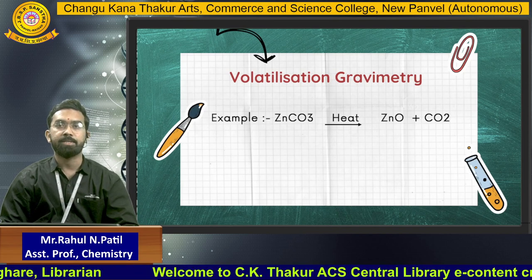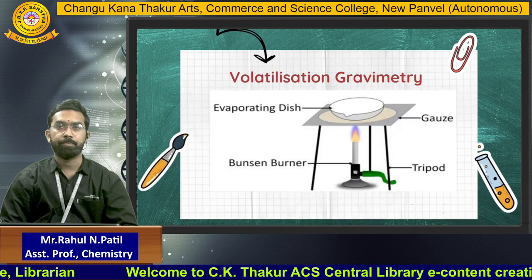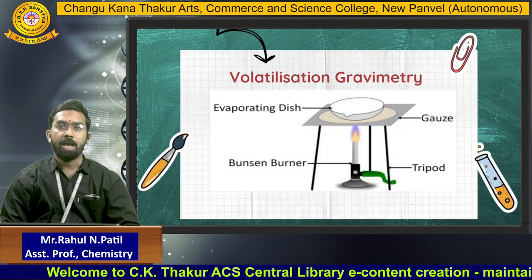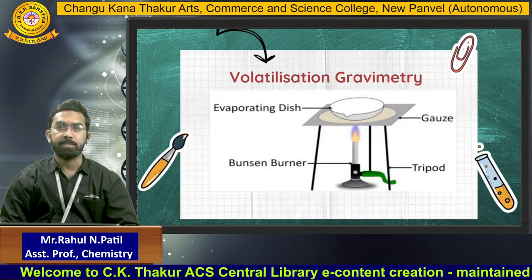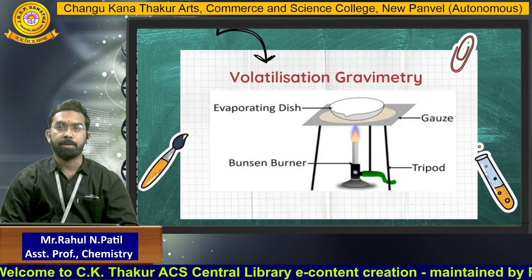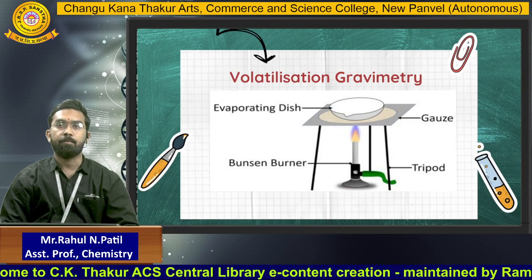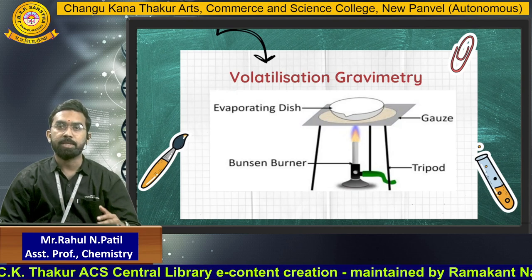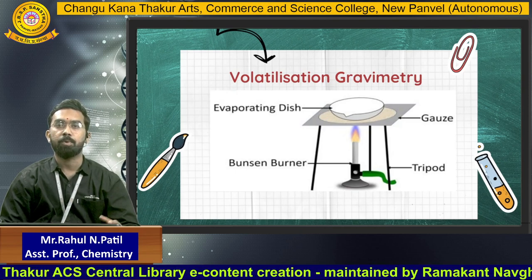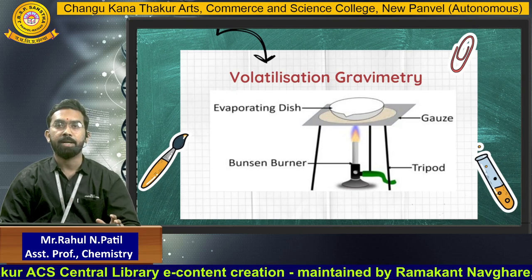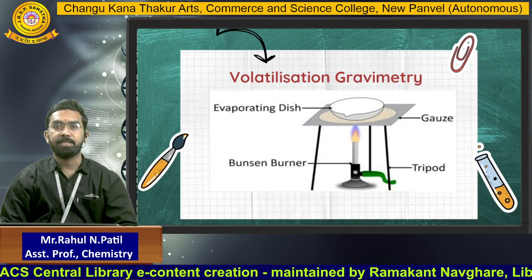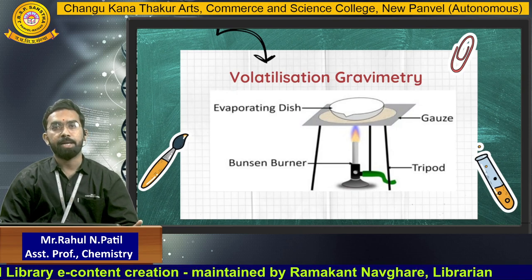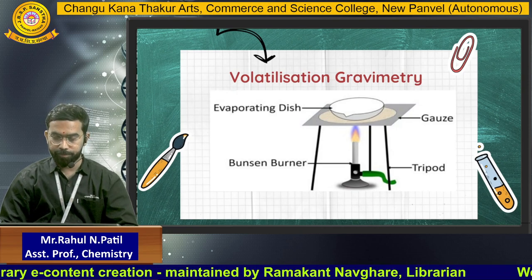For volatilization gravimetry, the apparatus required includes dishes, a burner, wire gauze, and a tripod. Continuous heating is applied, so one compound remains in the crucible and the other evaporates.